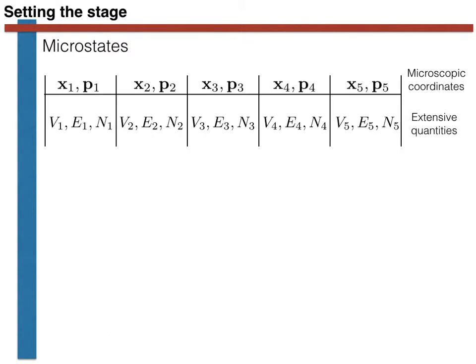We started this process of studying statistical mechanics by introducing the notion of a microstate. We said that a microstate is a set of values for the positions and momenta of all the atoms in the system. We then said that phase space was the set of all possible microstates — that is to say, the set of all possible positions and momenta that the atoms could conceivably have.